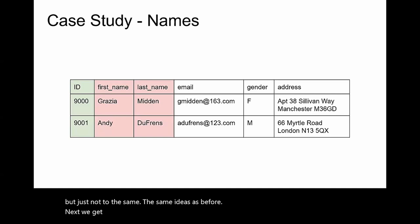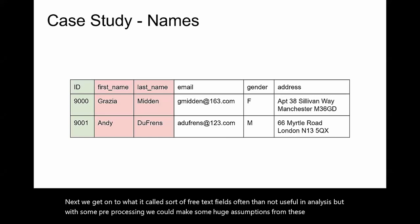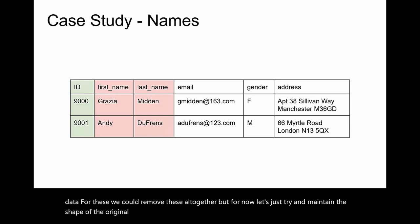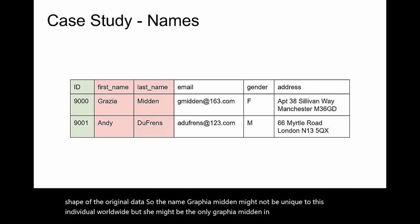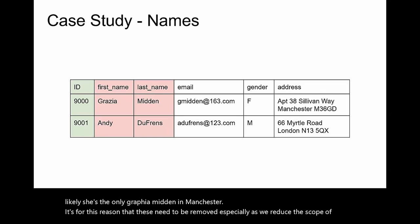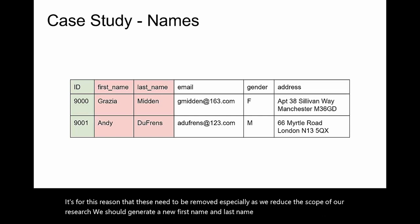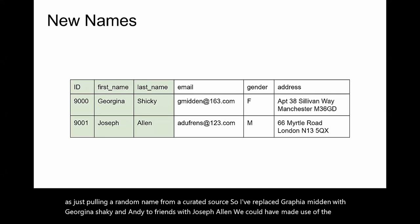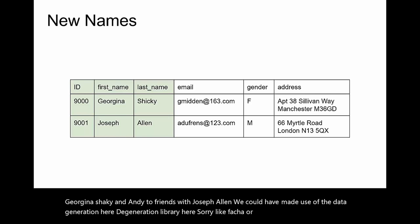Next we get on to what are called free text fields. Often they're not useful in analysis, but with some pre-processing we could make huge assumptions from these names about race or age. The name Graphia Midden might not be unique worldwide, but she might be the only Graphia Midden in the UK, and more likely the only one in Manchester. For this reason these need to be removed, especially as we reduce the scope of our research. We should generate a new first name and last name through a masking method, such as pulling a random name from a curated source. So I've replaced Graphia Midden with Georgina Shickey and Andy DeFriends with Joseph Allen.